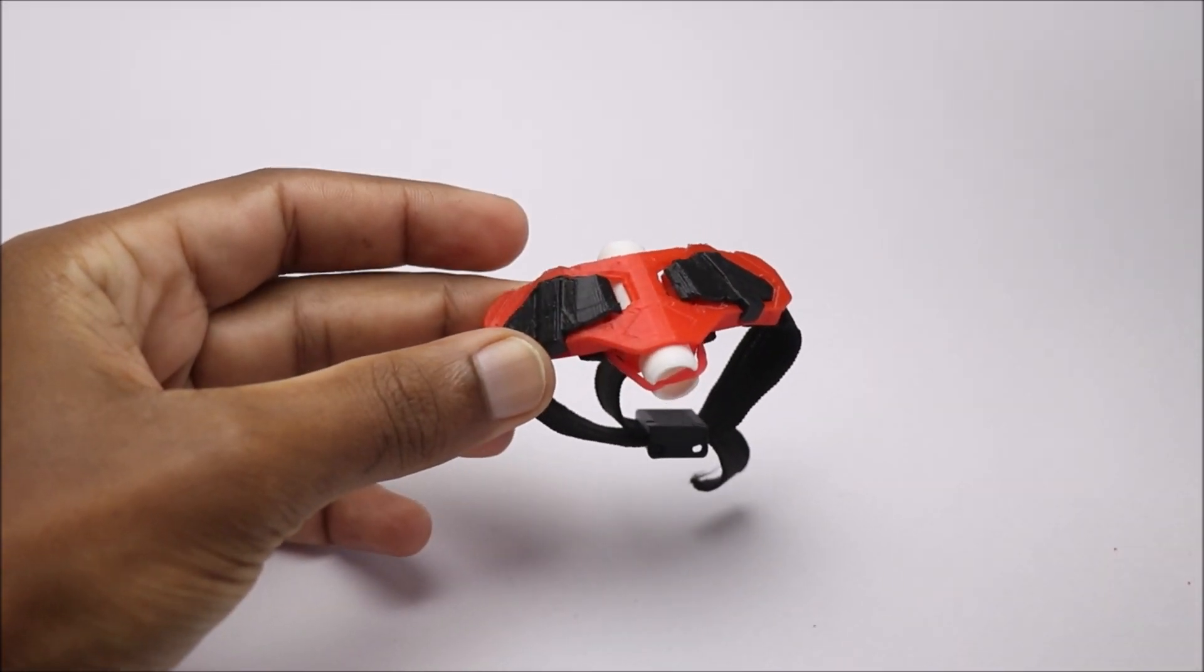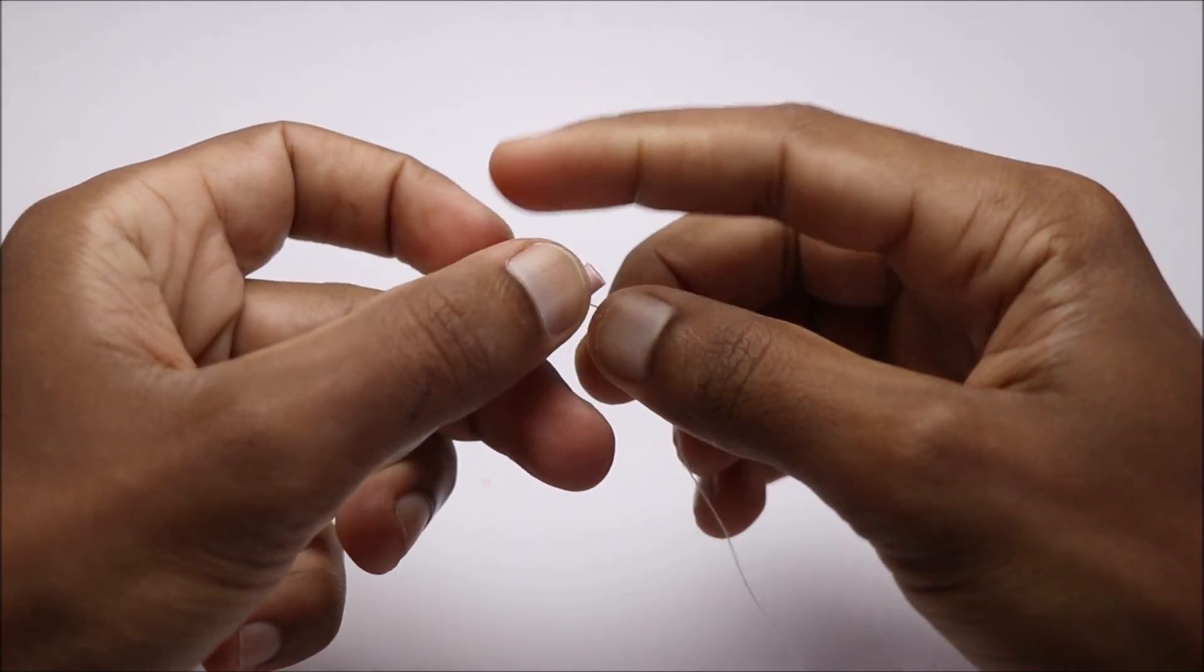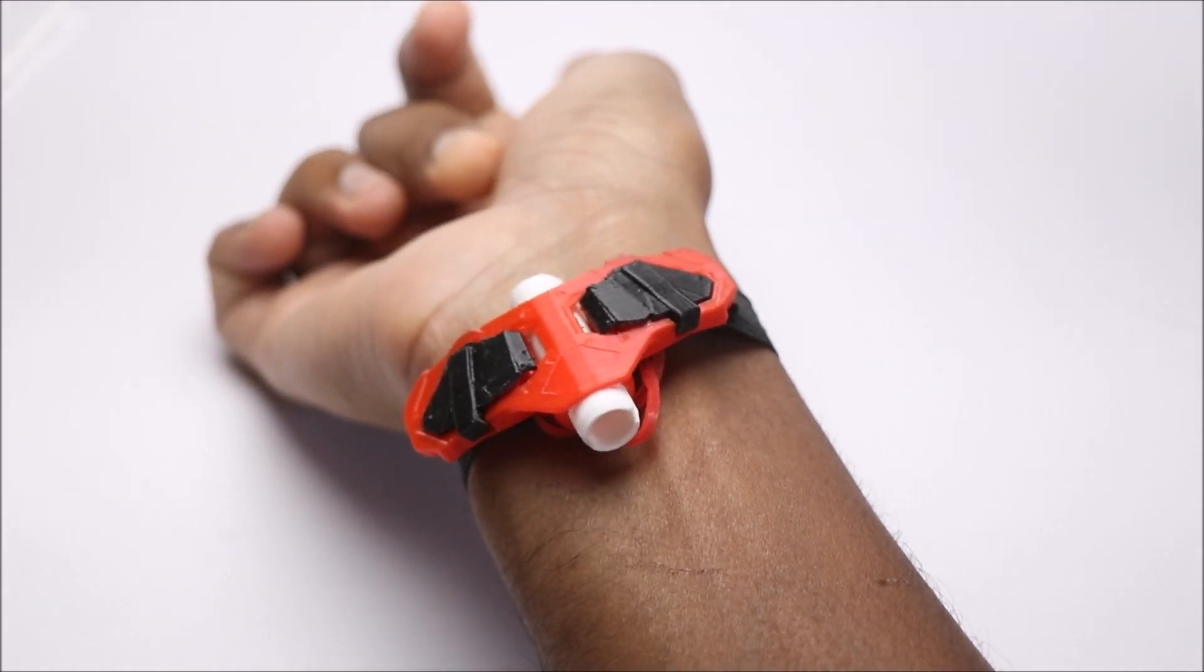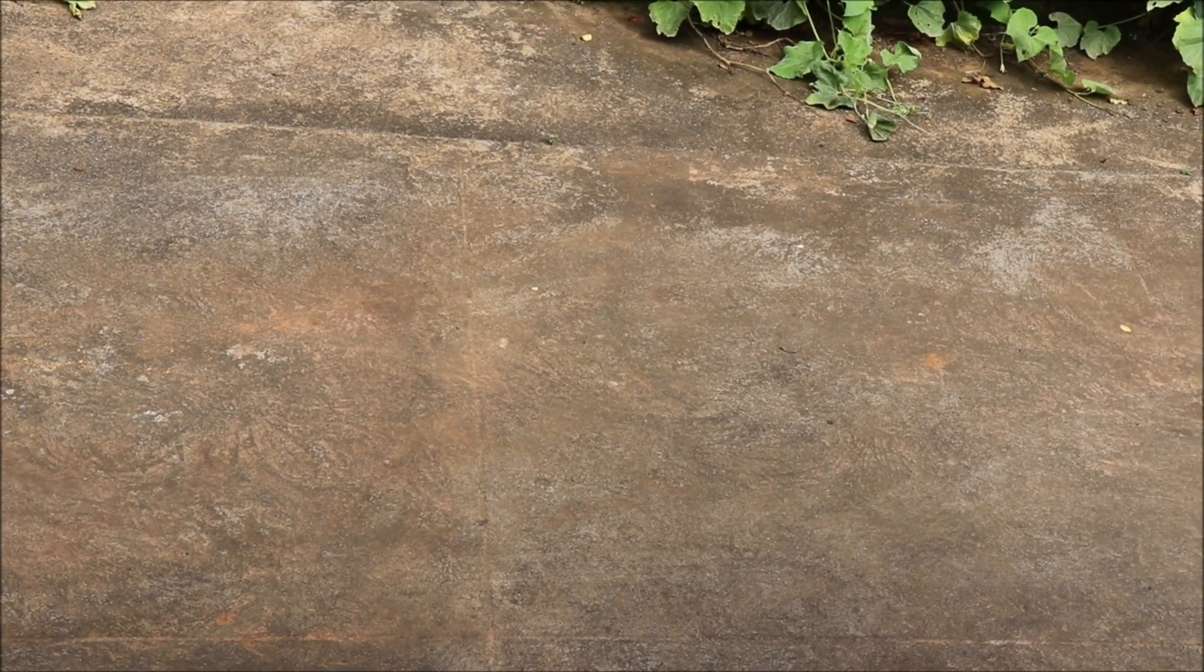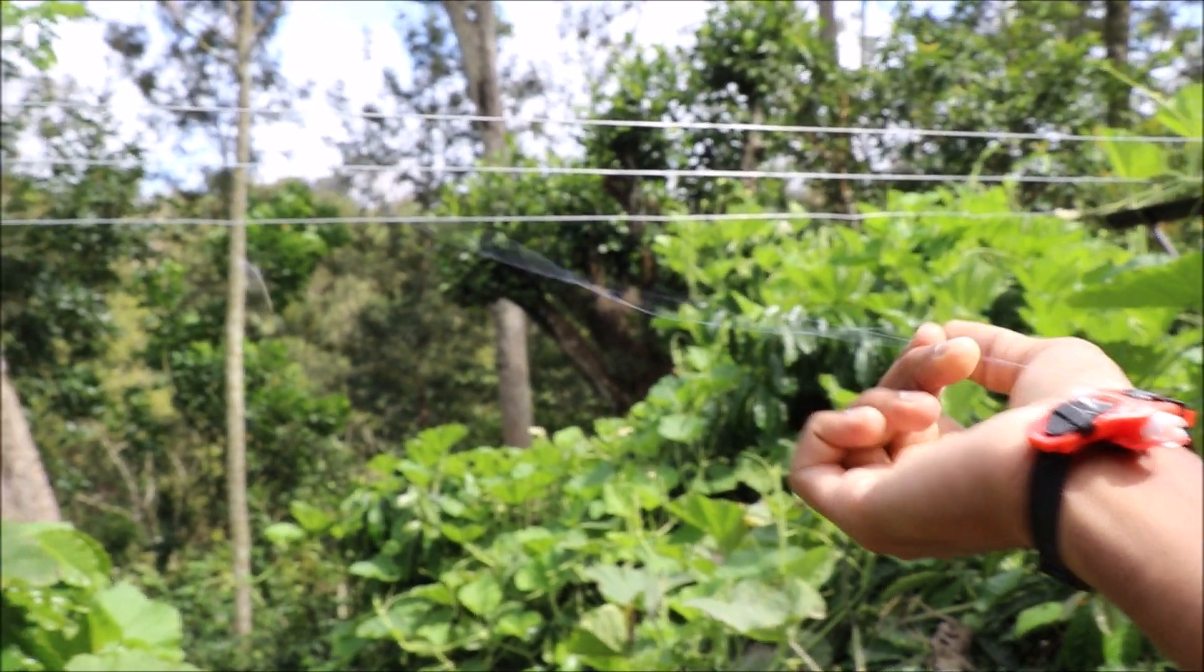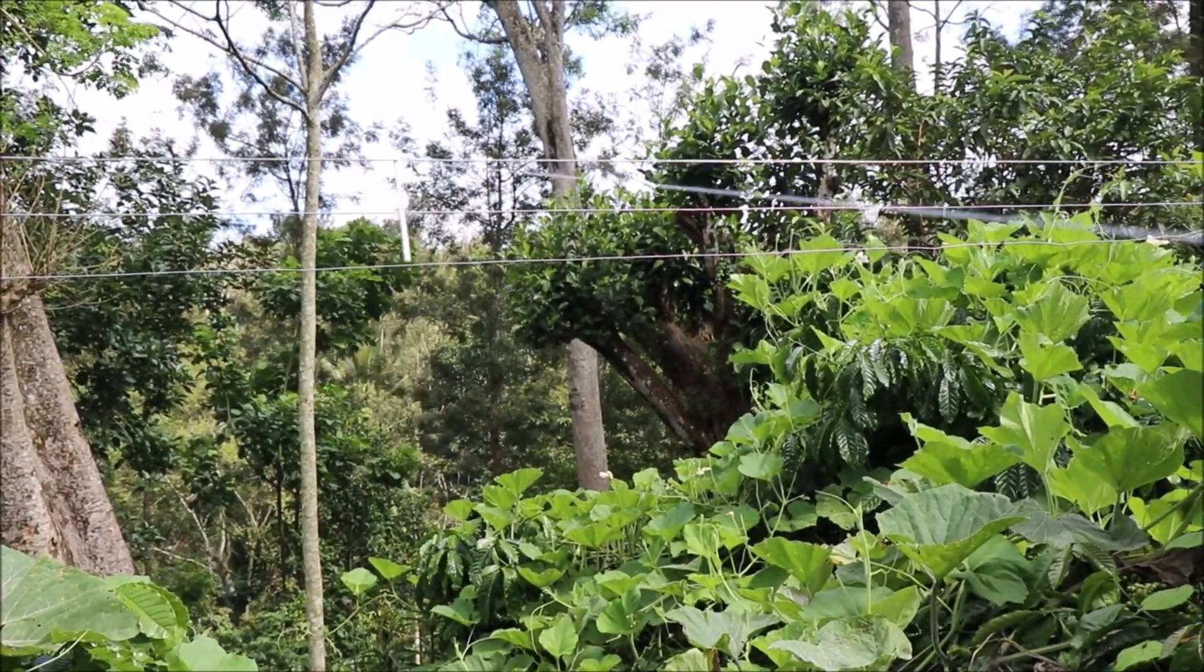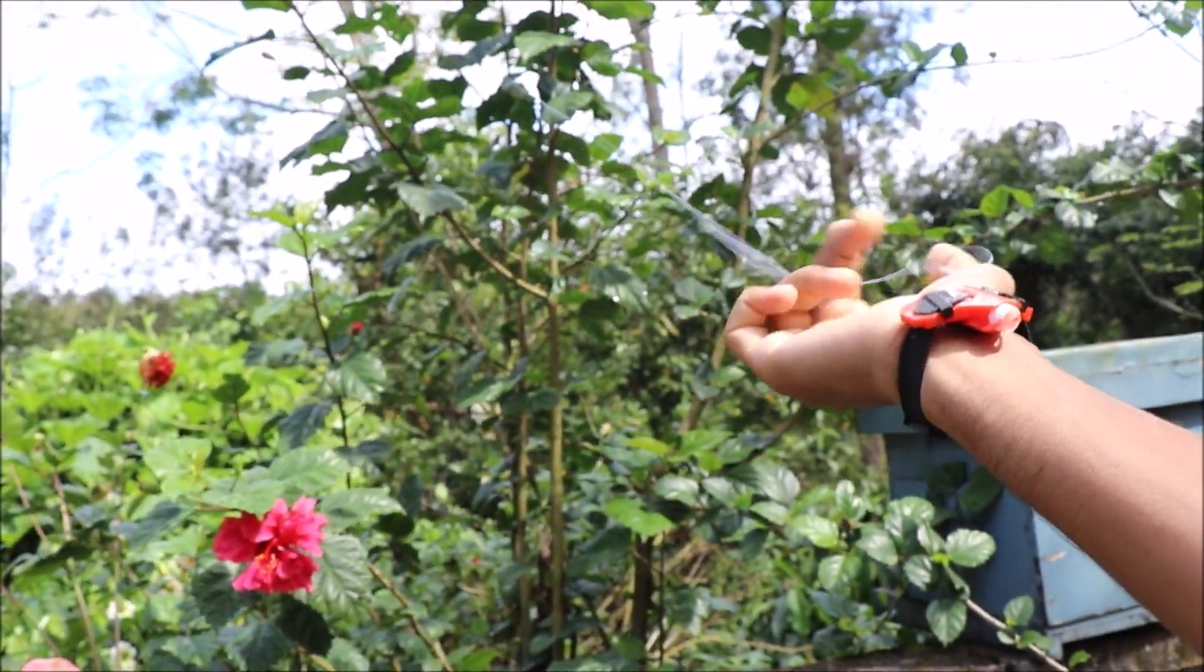Now our assembly process is complete. For the web, I used a piece of white thread attached to the tip of the cartridge. We have our web shooter ready. Let's check how it works. It works pretty well without any springs. Hope you enjoyed my idea. Thank you for watching!